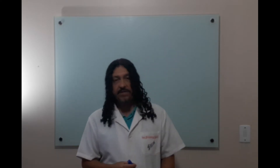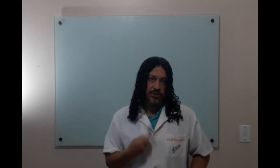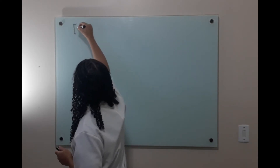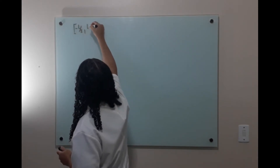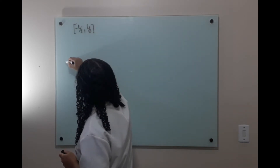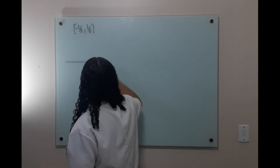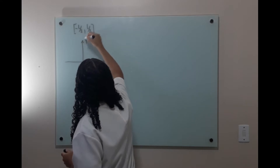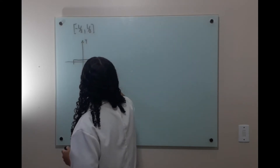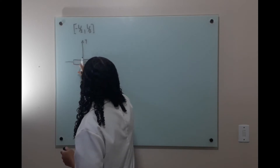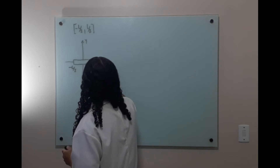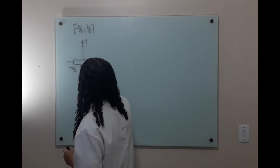Neste estudo de caso, vamos determinar o centro de massa de um corpo rígido ideal, que está localizado entre os pontos, na direção X, menos L sobre 2 e L sobre 2. Desenhando aqui a direção X e a direção Y, o corpo rígido, que é uma barra linear, está localizado entre -L/2 e L/2, passando pelo ponto zero.